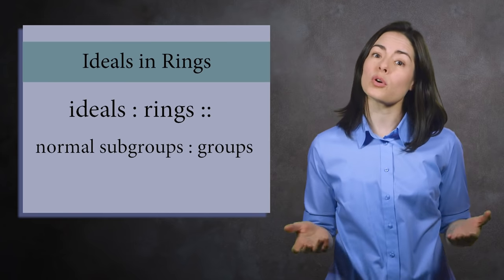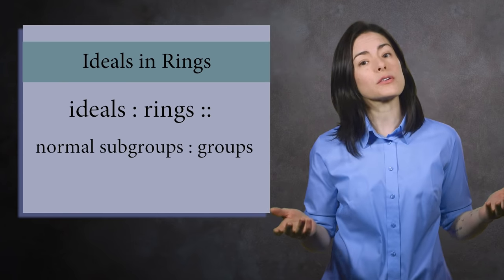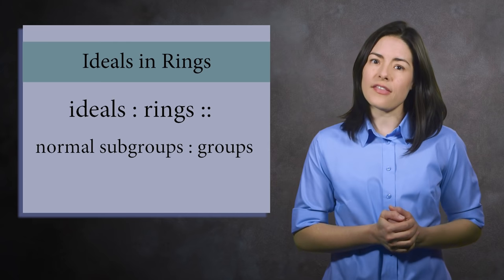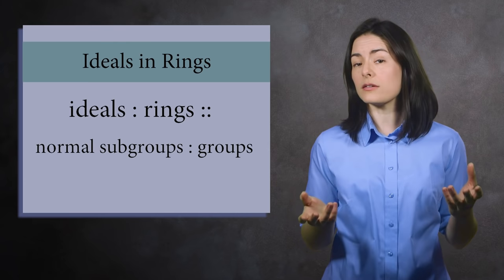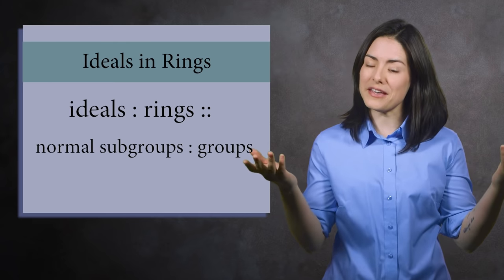Indeed, when you think of normal groups you may think of cosets, factor groups, and kernels of homomorphisms. And these concepts do carry over to ideals and rings. Let's see how.